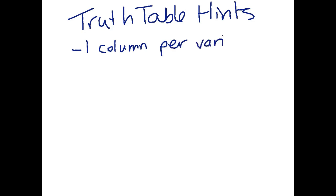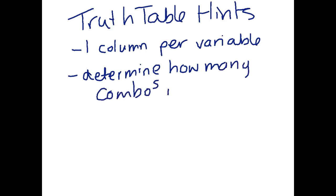So I'm just going to give you my truth table hints. So one column per variable. Then determine how many combinations you'll need. So 2 to the n, where n is the number of variables that you are using for your expression. And then you have next to your columns,